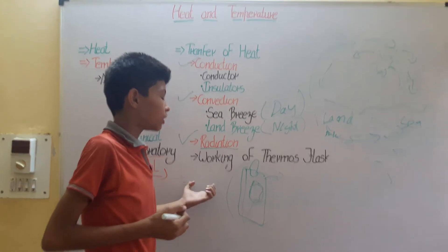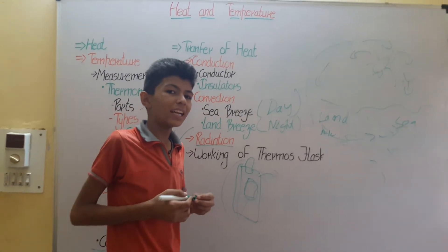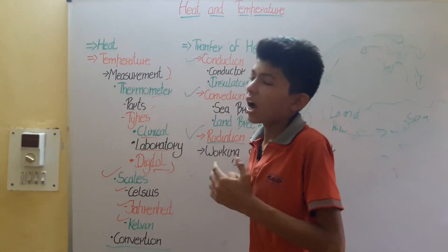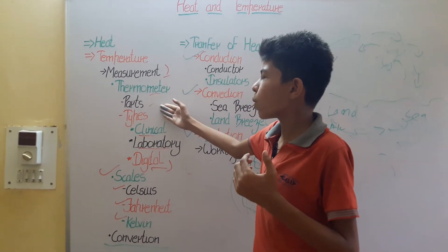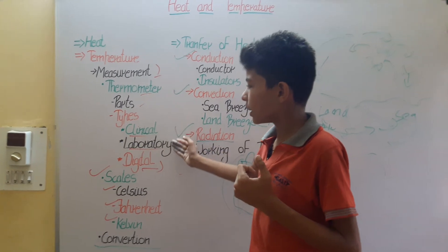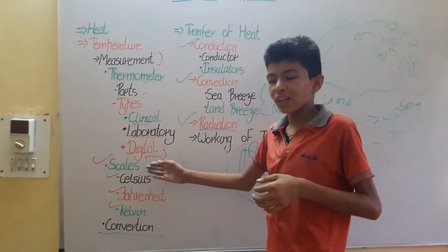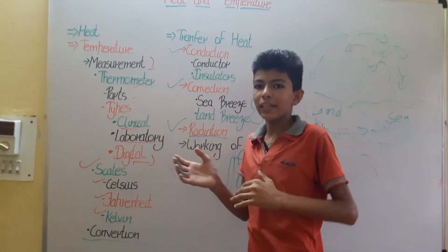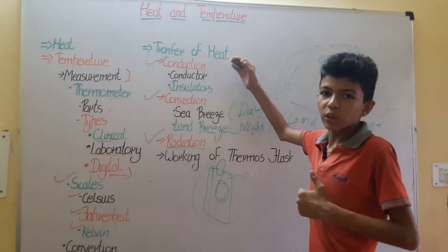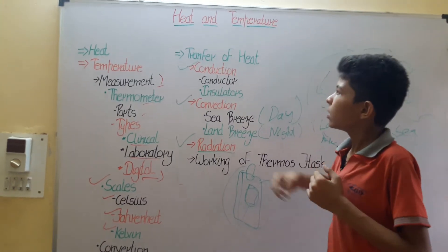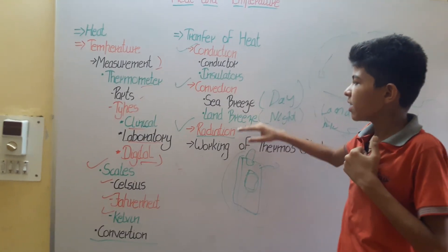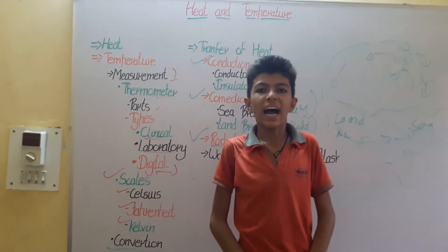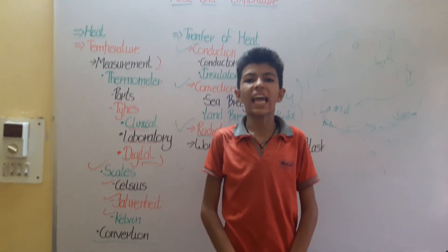So let's summarize what we have learned today. We learned about heat — what it is, temperature, how to measure it, what a thermometer is, its parts, and types: clinical, laboratory, and digital. Then we learned about the scales — Celsius, Fahrenheit, and Kelvin — and how to convert between them. We also learned about the transfer of heat through conduction, convection, and radiation, and the working of the thermos flask. Friends, I hope you liked this video — thanks for watching.